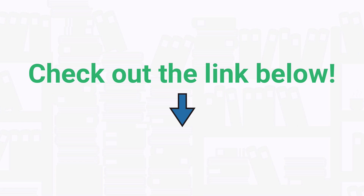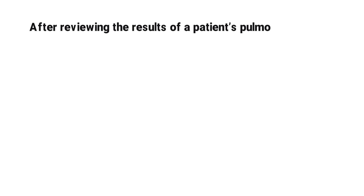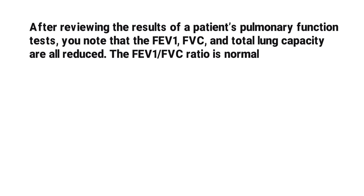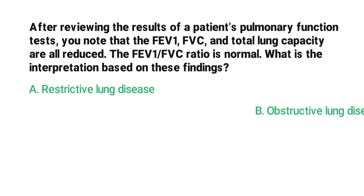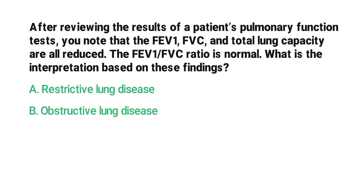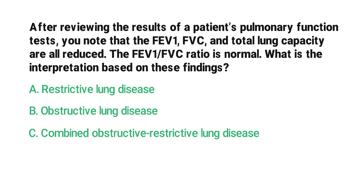After reviewing the results of a patient's pulmonary function tests, you note that the FEV1, FVC, and total lung capacity are all reduced, and the FEV1 to FVC ratio is normal. What is the interpretation based on these findings? A) restrictive lung disease, B) obstructive lung disease, C) combined obstructive-restrictive lung disease, D) the test is invalid.